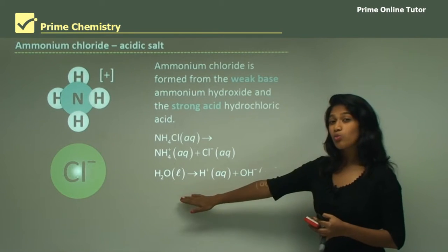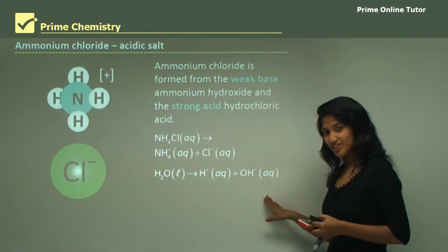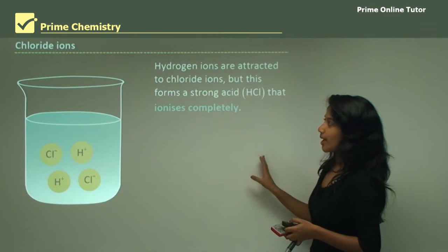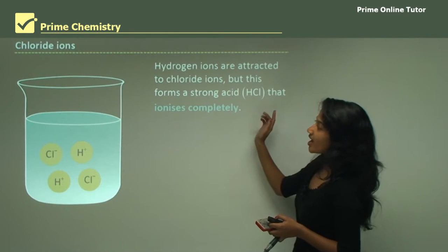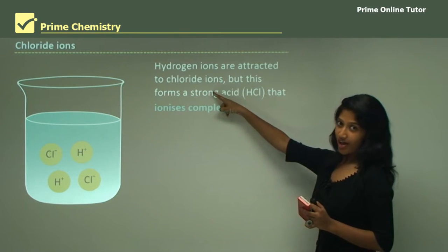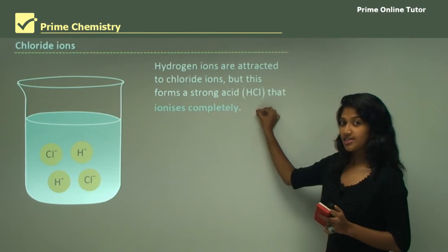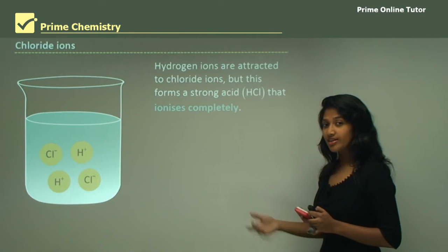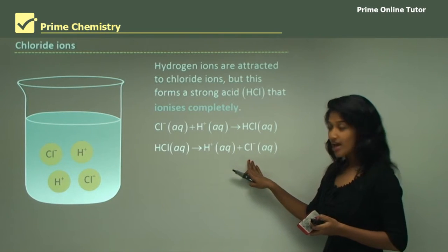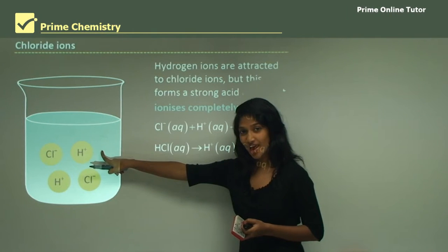Water in the solution ionizes to produce hydrogen ions and hydroxide ions. With the chloride ions, the same process occurs: they attract hydrogen ions from the water, producing hydrochloric acid — a strong acid — which readily ionizes back into hydrogen ions and chloride ions. So there is a concentration of hydrogen ions in solution.